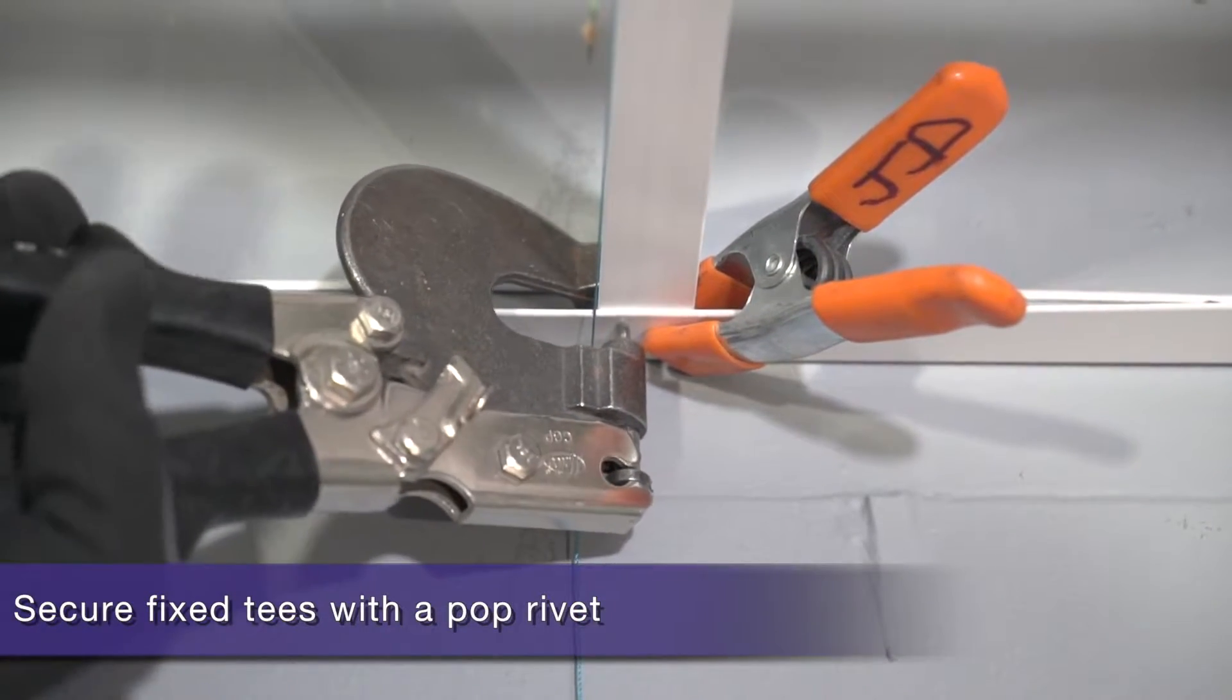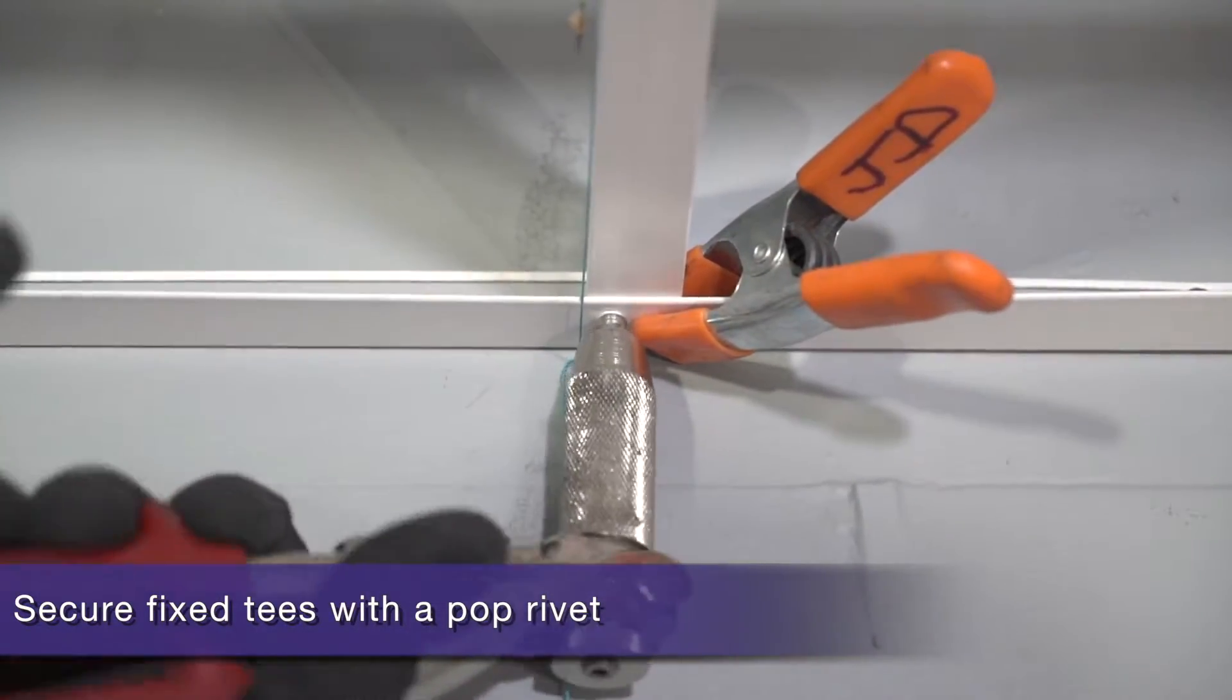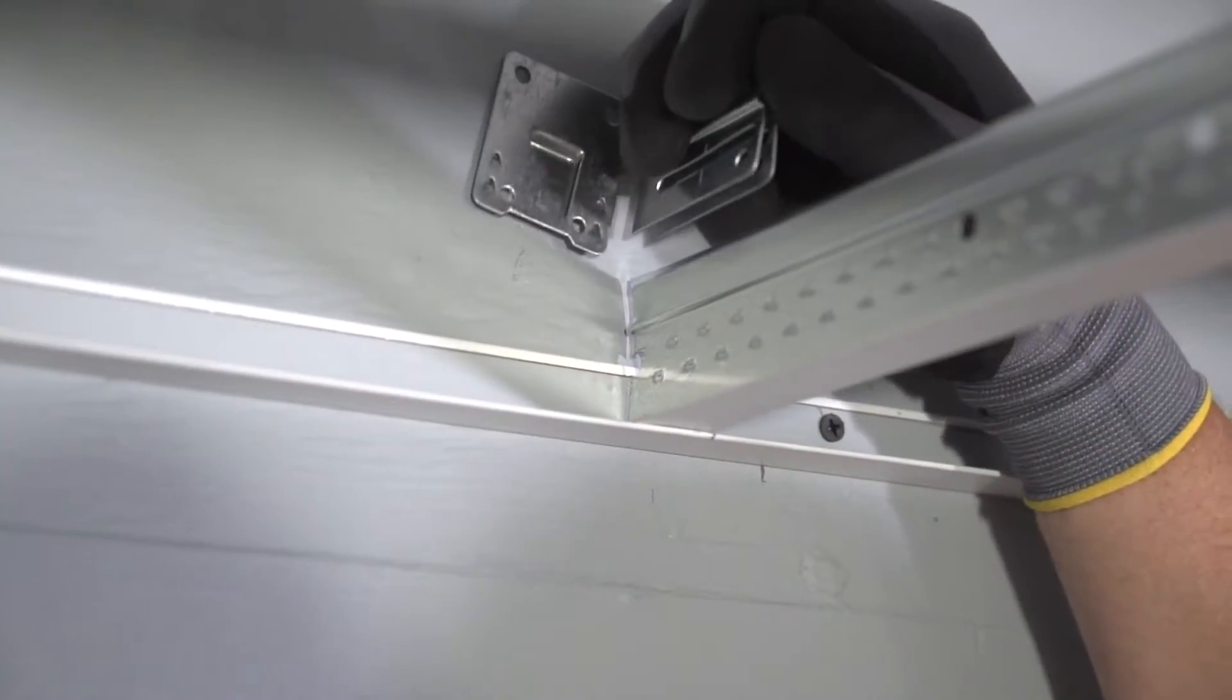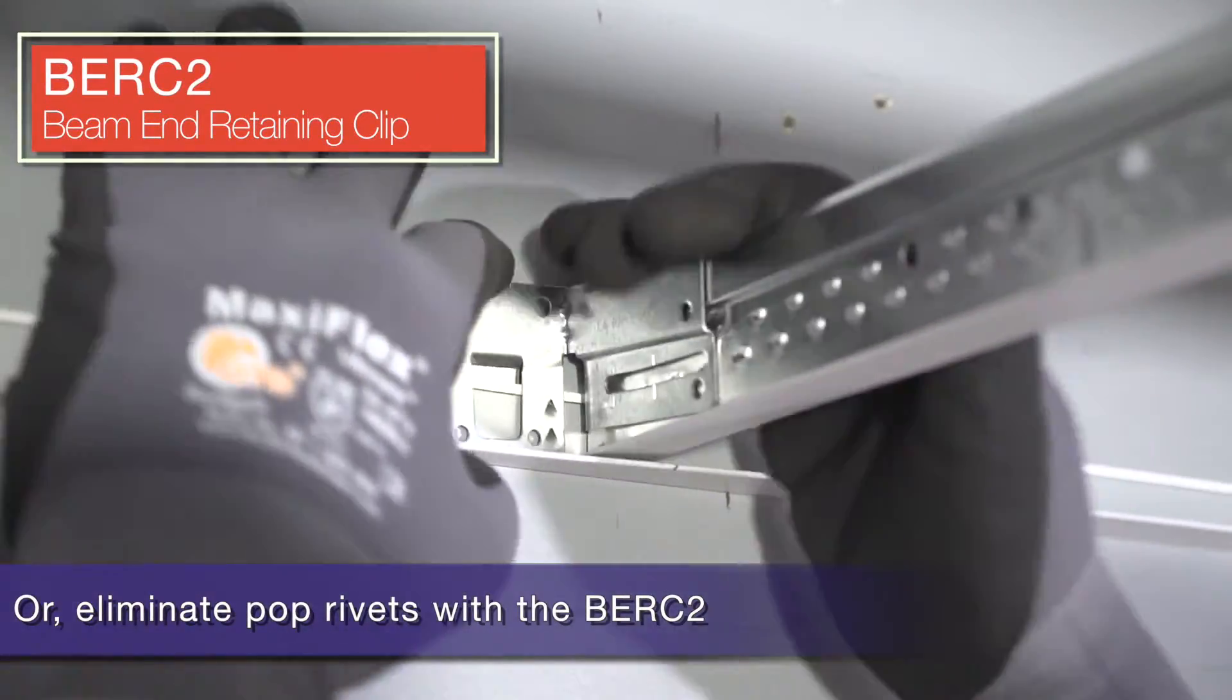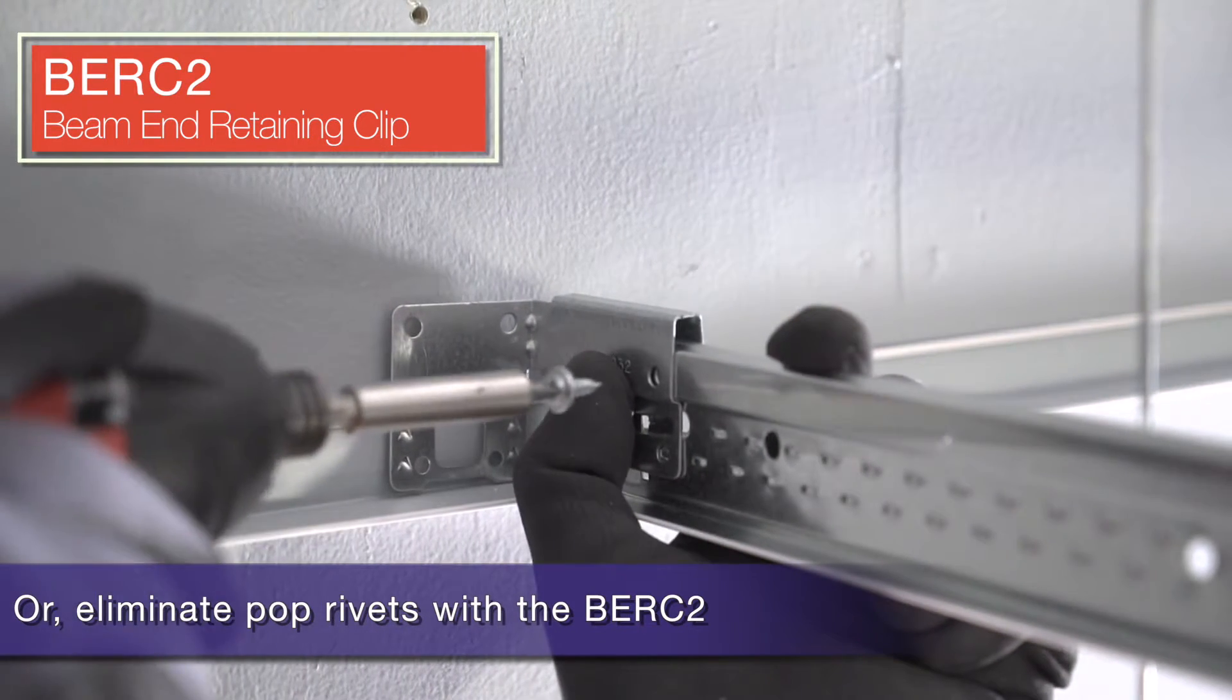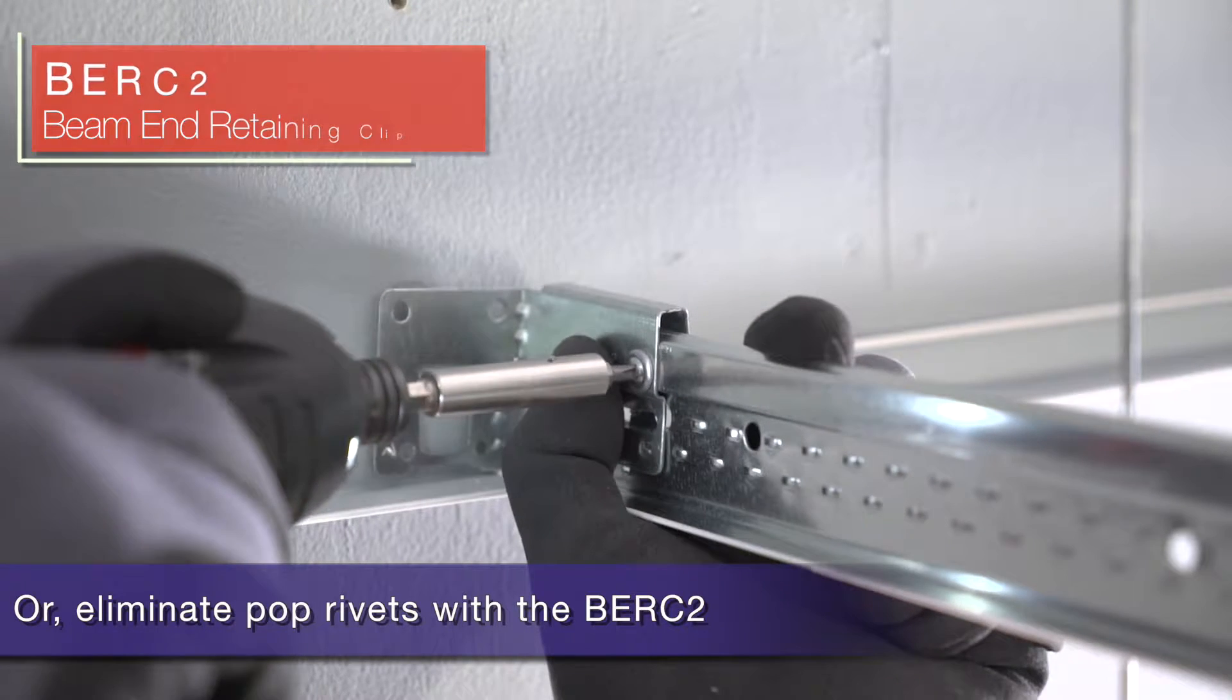These fixed tee placements are by code traditionally pop riveted into place. But who wants to see pop rivets? With the Seismic RX, there is approval for using the Burke 2 for fixed tee locations provided you install a framing screw through the locking circular hole as shown here.